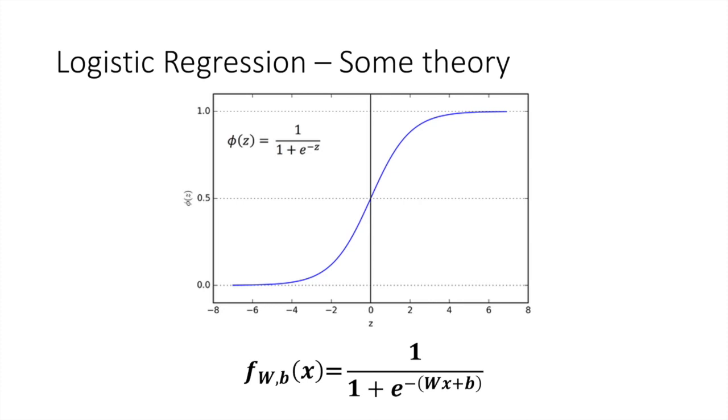For logistic regression it looks something like that: f of x equals 1 over 1 plus e to the power minus wx plus b. And this is where we get our familiar linear regression wx plus b. This is where the name comes from, logistic regression.